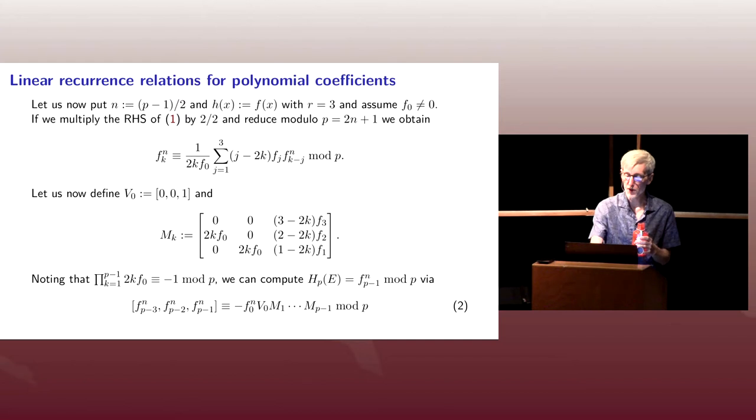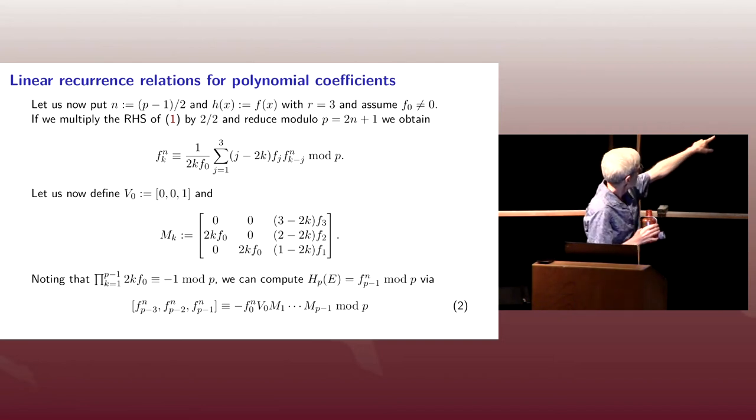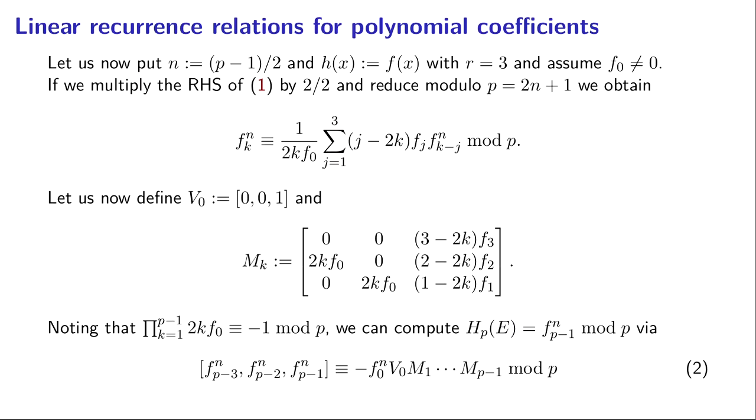And this implies, this now gives us a formula for computing the Hasse invariant. We want to, we're going to compute the coefficient of x^(p-1) in the nth power of f modulo p, using this by applying our linear recurrence, applying it to v_0, our starting vector, and then multiplying by minus f, the constant coefficient of f raised to the nth power. And that will give us a sequence of three adjacent coefficients of f to the nth power. And it's the last entry is the one we want. f_{p-1}^n is exactly the coefficient we're looking for. That's where the Hasse invariant is.